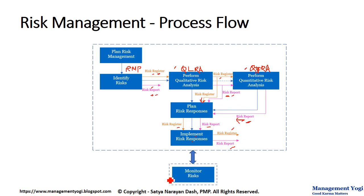We also have the Monitor Risk process, which overlooks all six of the other processes. In Monitor Risk, we assess whether our risk responses have been effective — whether what we planned and implemented has worked. Any new risks that come up will be identified here, and we will also conduct a risk audit. Additionally, during monitoring, the existing probability values, impact values, or both can change, and all of these activities take place in Monitor Risks.